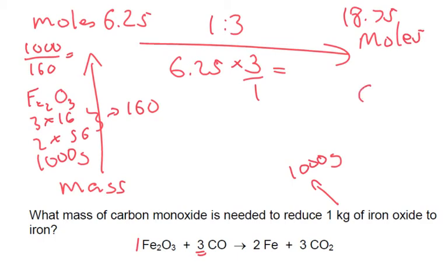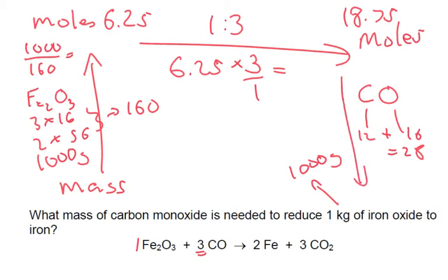Carbon monoxide is CO — that's 12 plus 16, which is 28. So the molar mass is 28. Finally, the mass is 28 multiplied by 18.75, and our final answer is 525 grams.